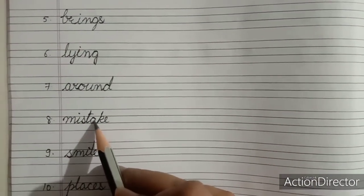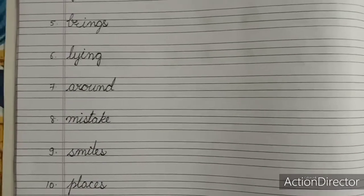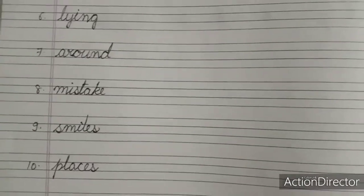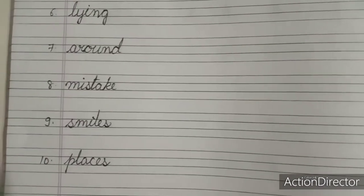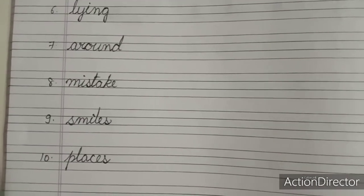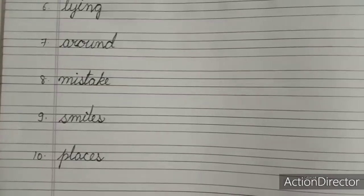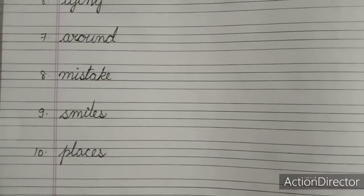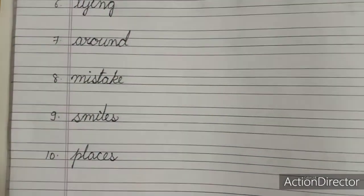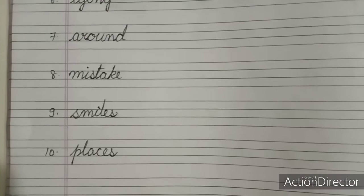Eight is mistake. Mistake means error. So sometimes what happens? You are writing, for example you are writing your name and by mistake you wrote the wrong spelling. So you say by mistake I wrote the wrong spelling. So by mistake means accidentally. So here mistake. M-I-S-T-A-K-E. Mistake.